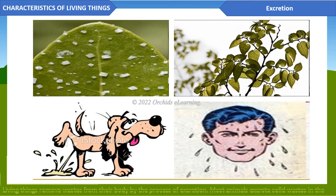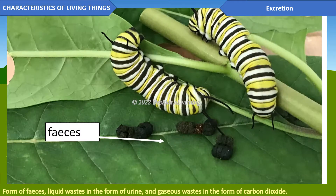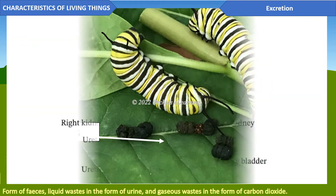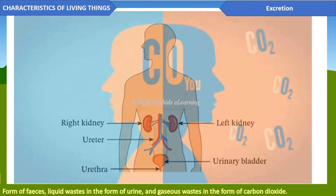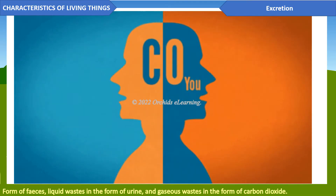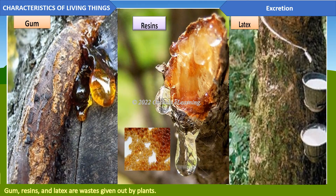Excretion: living things remove wastes from their body by the process of excretion. Most animals excrete solid wastes in the form of feces, liquid wastes in the form of urine, and gaseous wastes in the form of carbon dioxide. Gum, resins, and latex are wastes given out by plants.